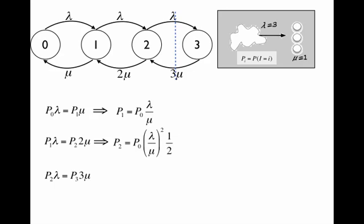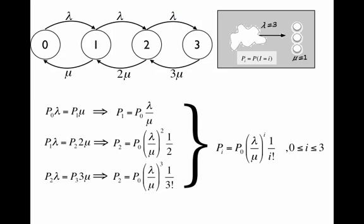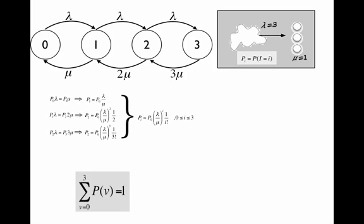And in general, we have that the state probability is given on this form. Now, we also must remember that we must have that the sum of our probabilities must be equal to 1. Combining these now, and we get this formula for the state probabilities.